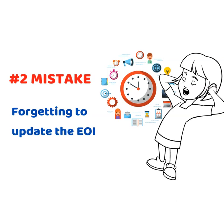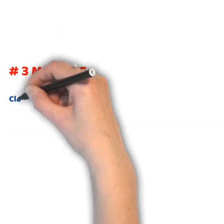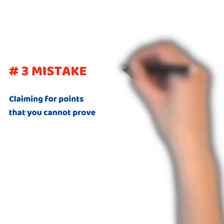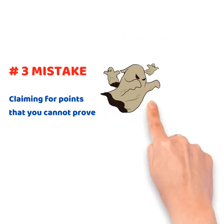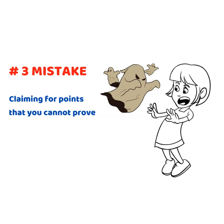The third mistake: claiming for points that you cannot prove. Understanding the correct interpretation and application of each criteria in the points categories is very critical. For example, an Australian study requirement has a legislative meaning that does not cover any or all courses undertaken in Australia. Claiming five points in this category for a study that is not recognized for the purposes of Subclass 491 or other points-tested visa can amount to false or incorrect information and can therefore result in visa refusal.